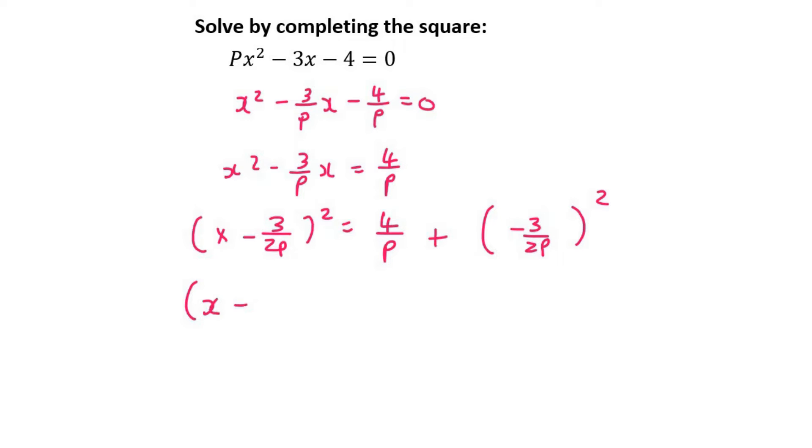Then what we do with these questions that have letters in them is we leave the left hand side, and now we're going to simplify on the right. So that's going to be 4 over p plus 9 over 4p squared. Can you see what I did? I squared there, and I squared there. Then what we want to do is we want to be able to put these two together.